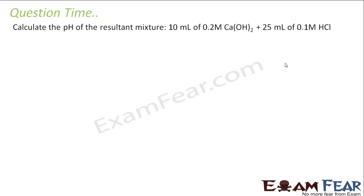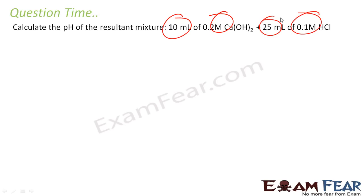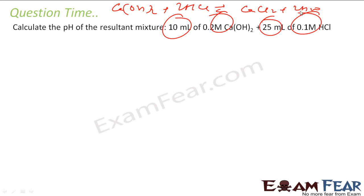Let's take a question. We have to find the pH of the resulting mixture of 10 mL of 0.2 M Ca(OH)₂ and 25 mL of 0.1 M HCl. The reaction is: Ca(OH)₂ + 2HCl → CaCl₂ + 2H₂O. At t = 0, we need to find the initial concentrations.